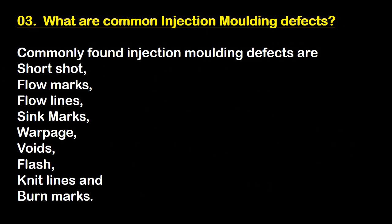Third question: what are the common injection molding defects? Commonly found injection molding defects are: short shot, flow marks, flow lines, sink mark, warp, voids, flash, knit lines, and burn marks.